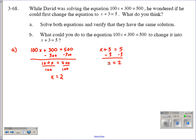So David was wondering if he could do, if he could get the same thing here. And he can. So what could you do to the equation 100x plus 300 equals 500 to change it into our second equation?